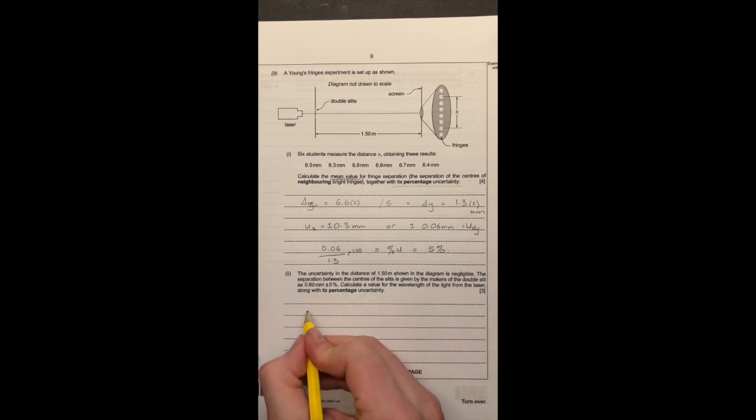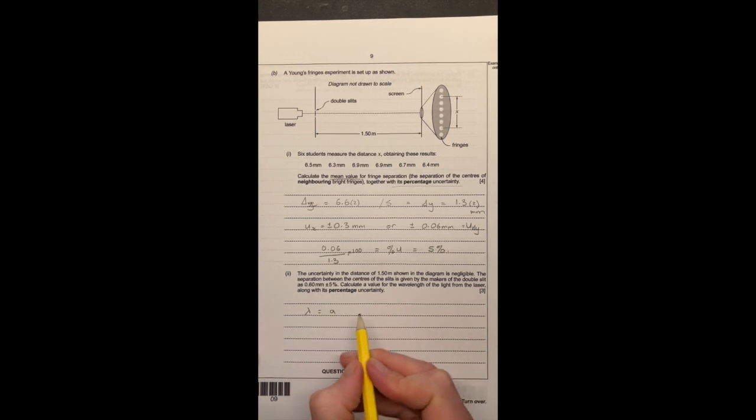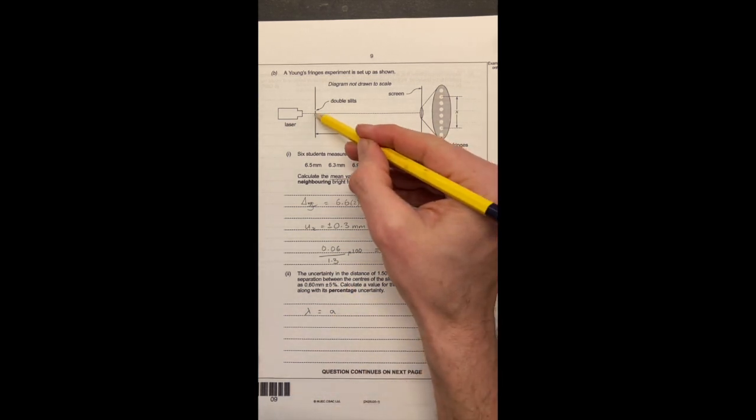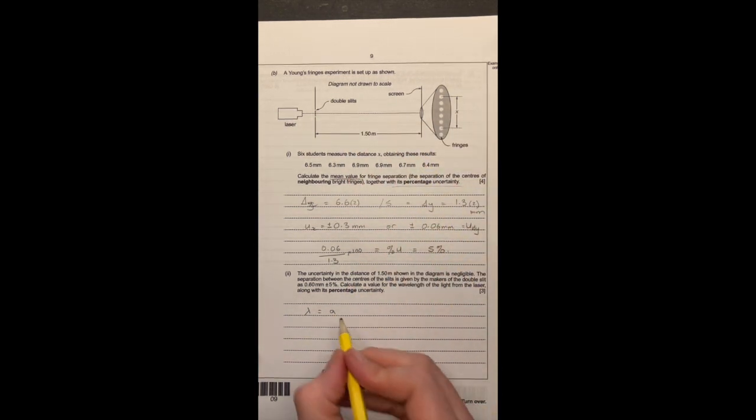So for the next question, we're going to use the formula. So lambda equals A, which is the fringe, sorry, not the fringe. A is the slit separation, so the distance between the two slits up here, times by the fringe separation, delta y, all over the distance to the screen, which we're going to denote as capital D in this instance.